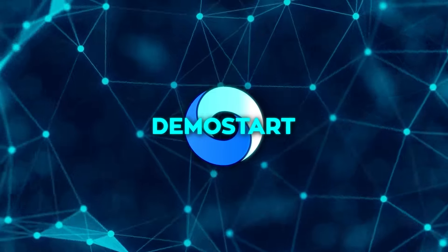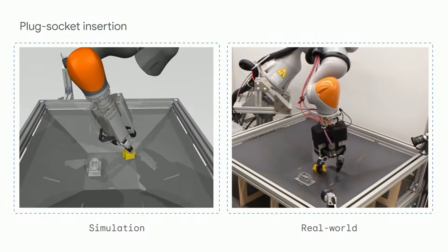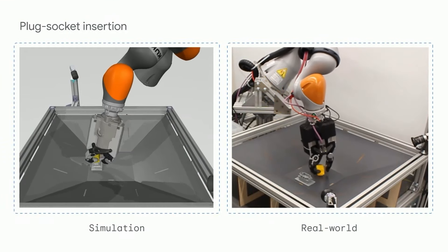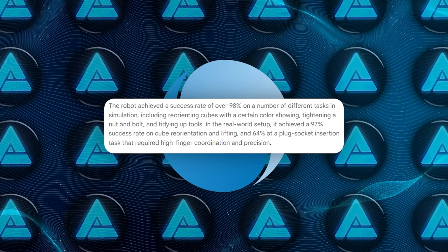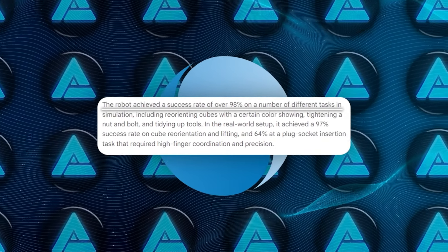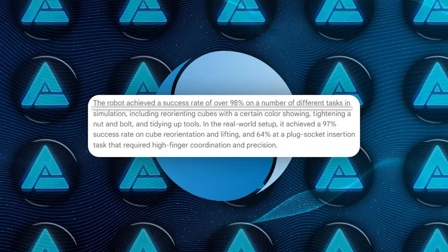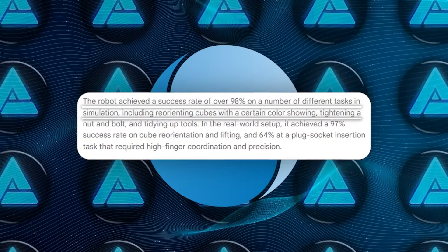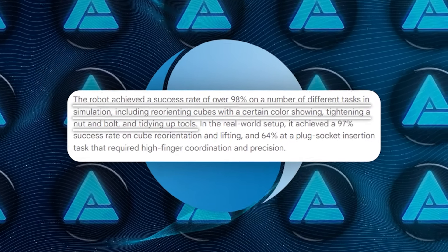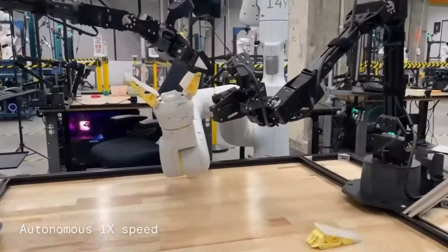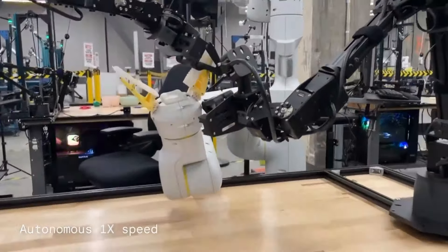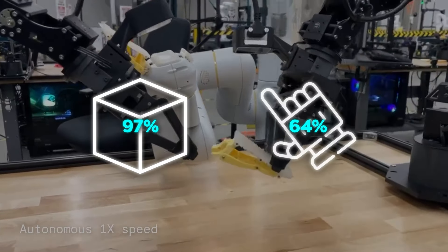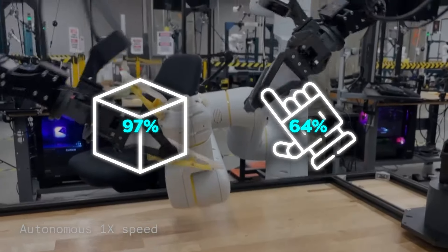One of the standout features of Demostart is its ability to handle multi-fingered tasks with near-human precision. In simulated environments, the system has achieved over 98% success rates in tasks like reorienting colored cubes, tightening nuts and bolts, and organizing tools. Once transferred to the real world, these robots maintained high success rates: 97% in cube reorientation and 64% in tasks requiring more complex finger coordination like plug socket insertion.